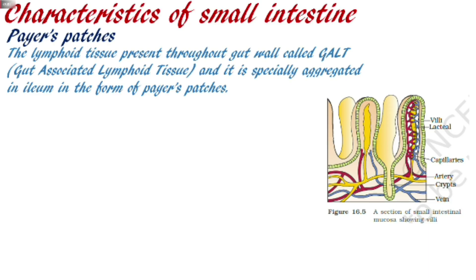Lymphoid tissue plays a role in our defense and immunity. This lymphoid tissue is present in our whole gut wall, and we call it gut-associated lymphoid tissue (GALT). But in Peyer's patches, specifically in the ileum region, these lymphoid tissues are in aggregated form. So we call those aggregated lymphoid tissues Peyer's patches. Peyer's patches are completely related to the defense and immunity of our body.